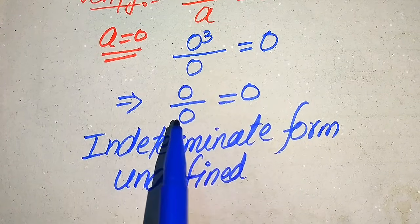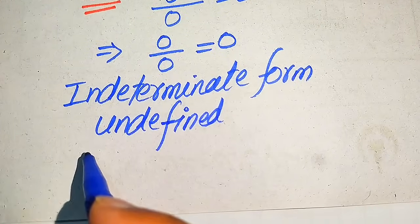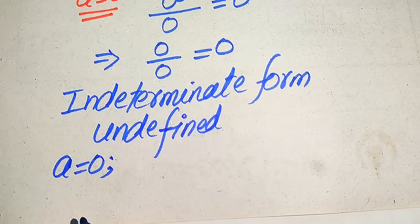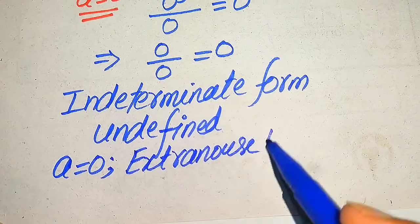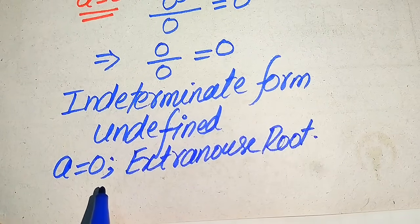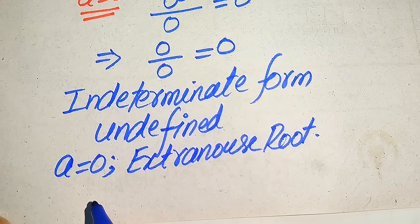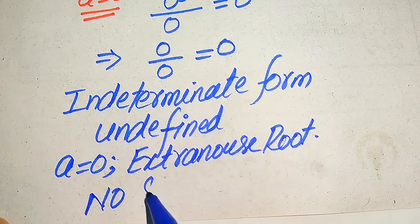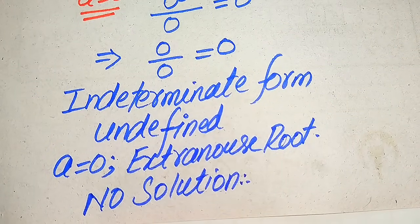Since the result is undefined, both sides are not equal for a equals 0. Therefore our conclusion is that a equals 0 is an extraneous root of the given equation, because it does not satisfy the given equation. Since the only root we found does not satisfy the equation, the final conclusion is that this equation has no solution.